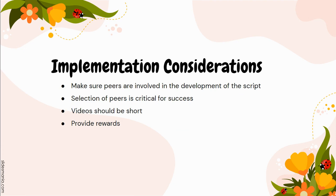Here are some implementation considerations. When using peers as intervention implementers, make sure that they are involved in the development of the script. This will ensure that the language and physical behaviors being modeled are age-appropriate and natural for the peers to perform. Selection of the peers is critical for success of this strategy and enhancing the target student's buy-in. If using videos, they should not be long in duration — three to four minutes are ideal. Provide rewards to the peers who are providing the modeling or support, and have an acknowledgement plan for the student receiving the support. When they follow the modeling, be sure to reinforce that behavior.